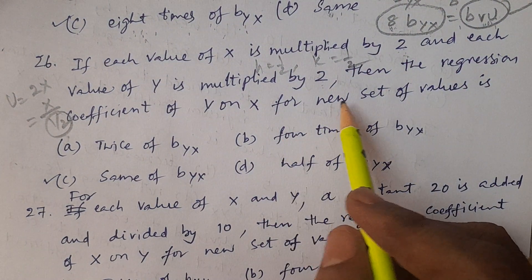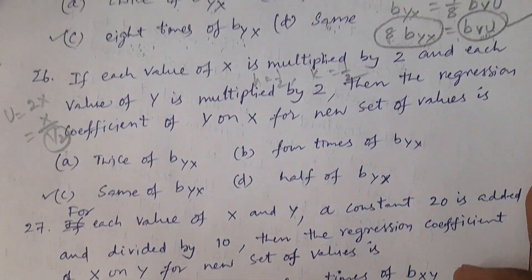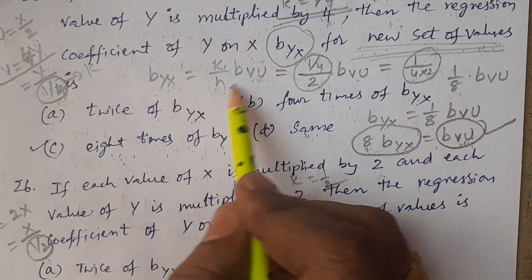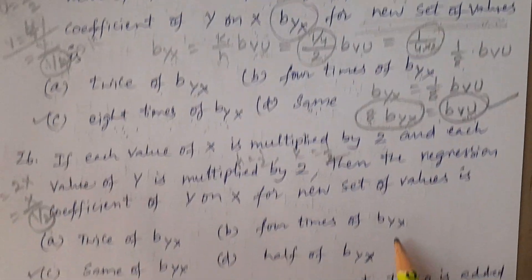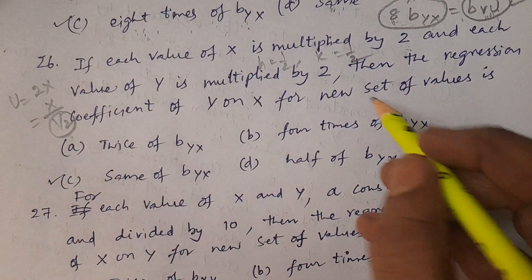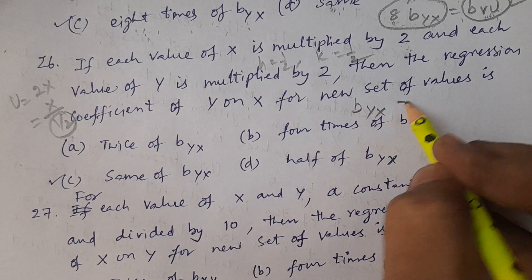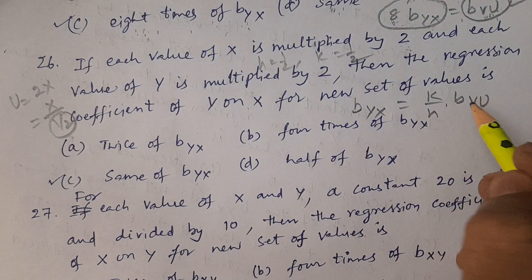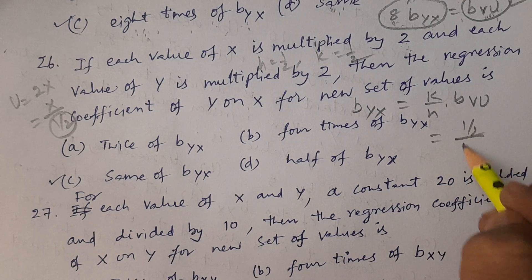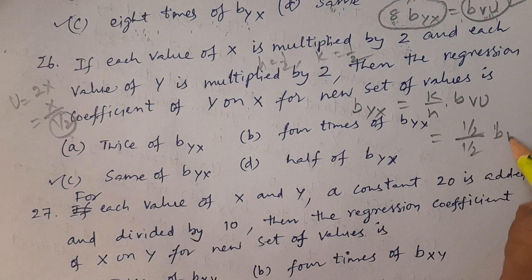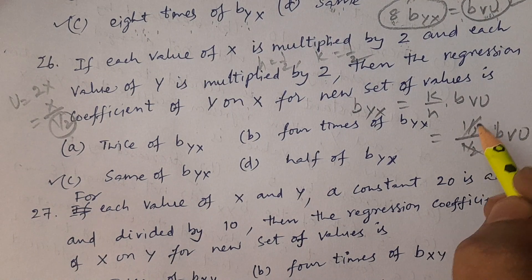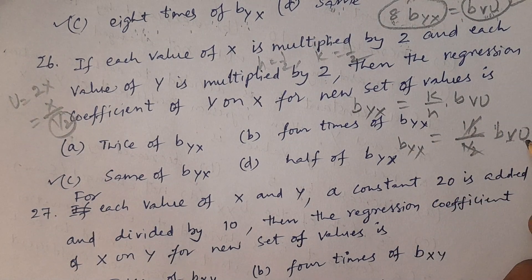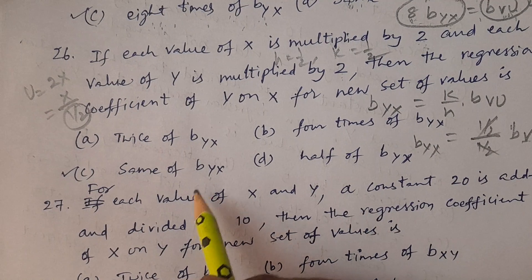Therefore in this formula: byx is equal to k by h into bvu. I write the formula again: byx equals k by h into bvu. k is 1/2 and h is 1/2. Therefore these two are cancelled, and therefore byx is equal to bvu. Therefore, do not change — no change, same.